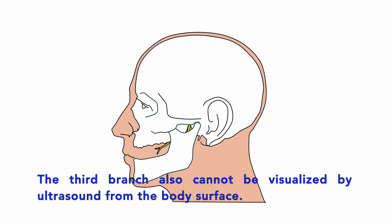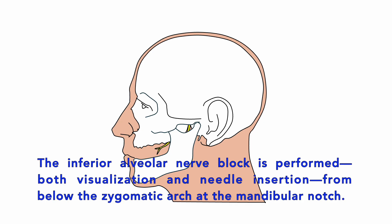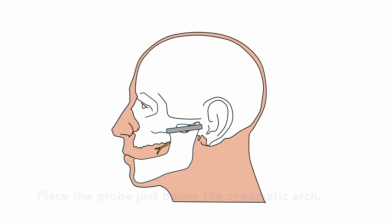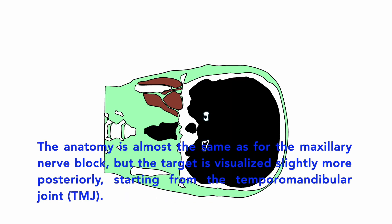The third branch also cannot be visualized by ultrasound from the body surface. The inferior alveolar nerve block is performed with both visualization and needle insertion from below the zygomatic arch at the mandibular notch. Place the probe just below the zygomatic arch and insert the needle through the narrow space between the probe and the arch. The anatomy is almost the same as for the maxillary nerve block, but the target is visualized slightly more posteriorly, including the temporomandibular joint.